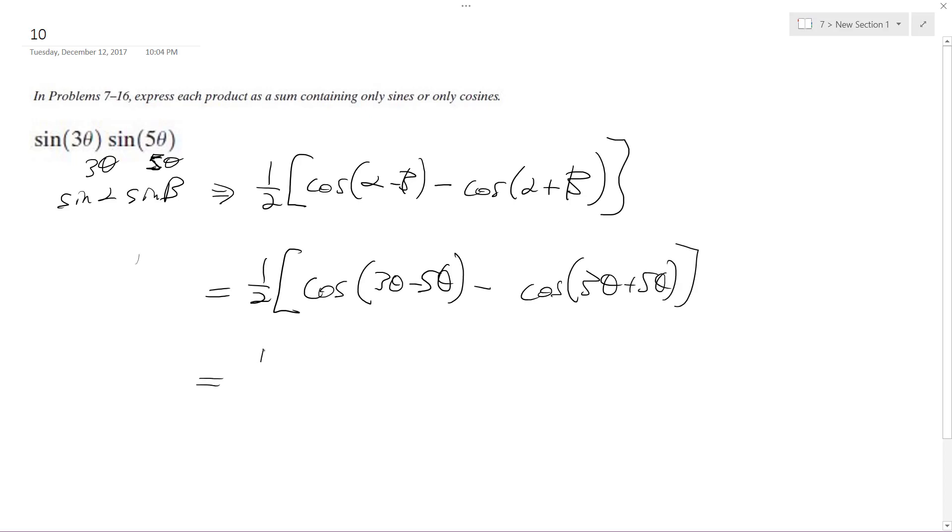And simplifying this down, we get one-half of quantity cosine of negative 2 theta minus cosine of 3 theta plus 5 theta, which is 8 theta.